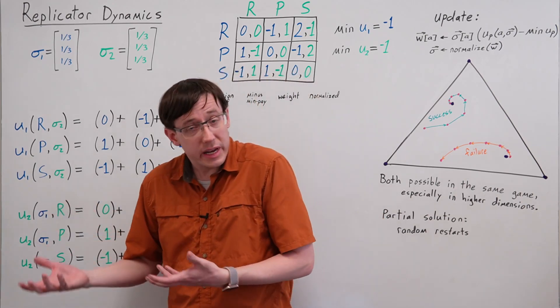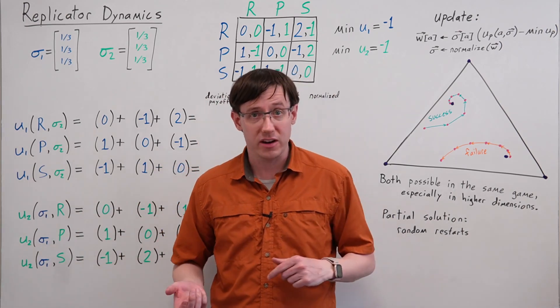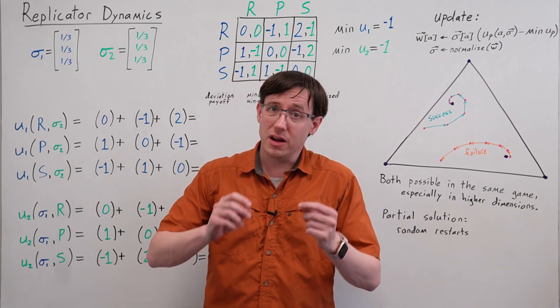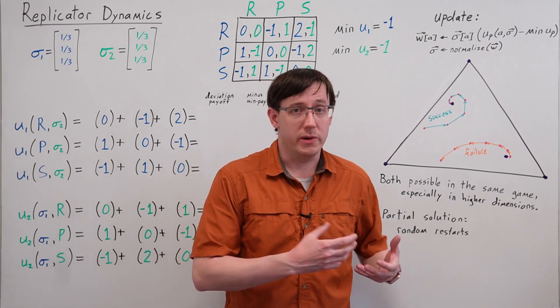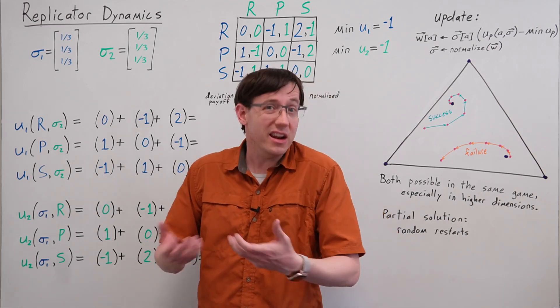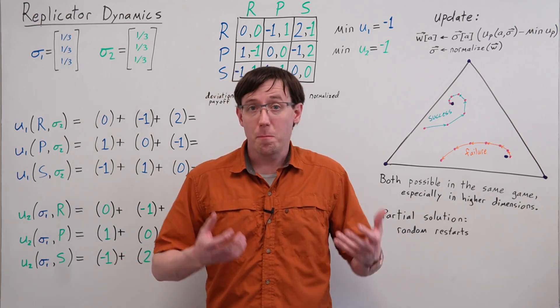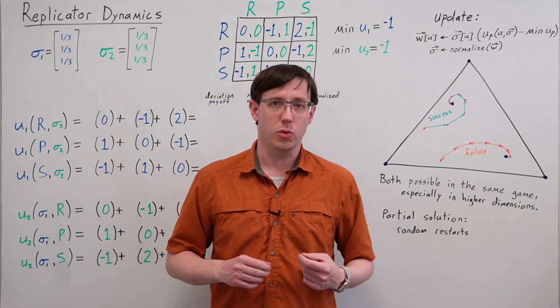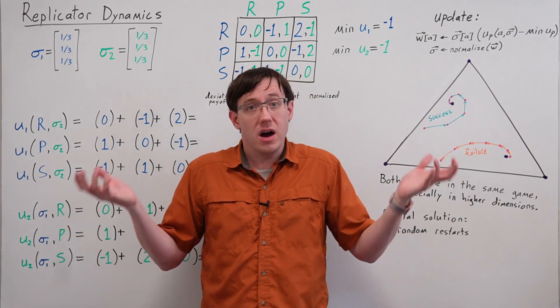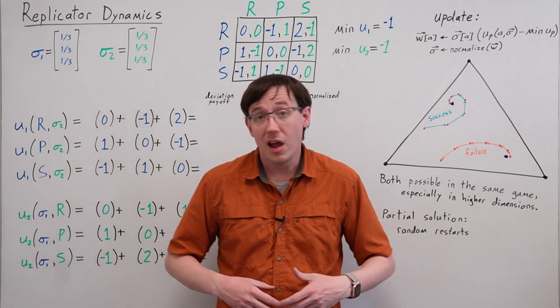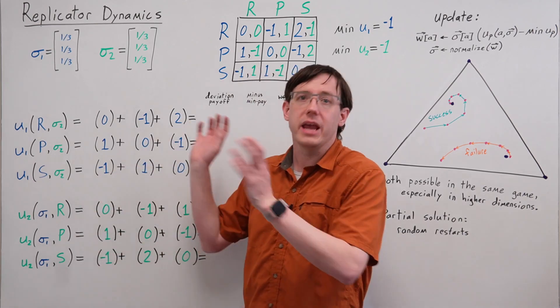When we previously encountered evolutionary game theory and talked about evolutionarily stable strategies, we focused specifically on symmetric games. Replicator Dynamics, in its evolutionary game theory origin, is also intended for symmetric games, and perhaps unsurprisingly, that's where it's most effective at finding Nash Equilibria. But since we're considering incomplete algorithms that may or may not succeed on any particular game, I'm going to show the extension of Replicator Dynamics to arbitrary, asymmetric games.